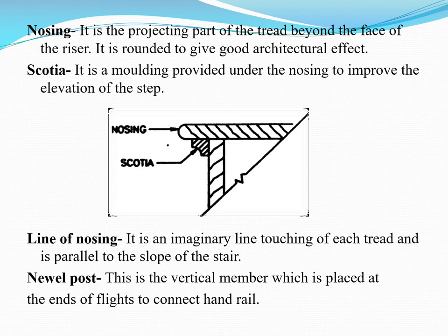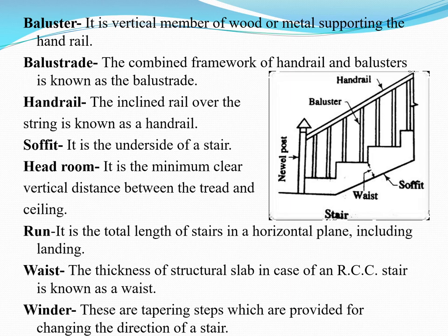The newel post is the first vertical member connected to the handrail. The baluster refers to the number of vertical members which support the handrail. The combined framework of the balusters and the handrail is called the balustrade. The handrail is an inclined rail over each string — the baluster — and is provided primarily for safety purposes.